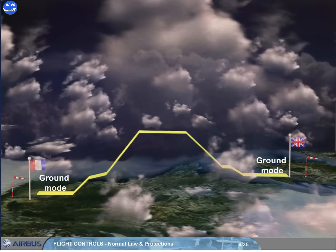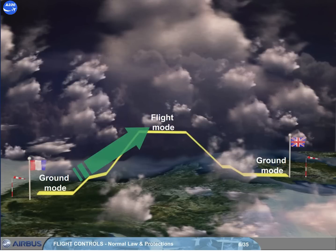Ground mode: on the ground, when the aircraft is electrically and hydraulically powered, there is a direct relationship between side stick deflection and surface deflection. Flight mode: after a gradual transition from ground mode just after liftoff, it consists of a load factor demand with auto trim and protections throughout the flight envelope.